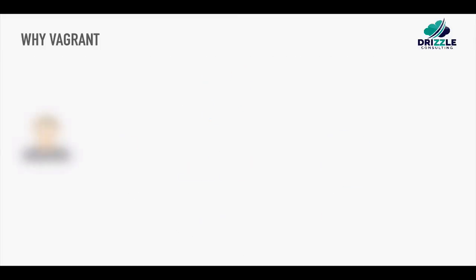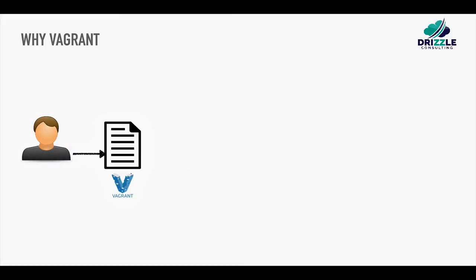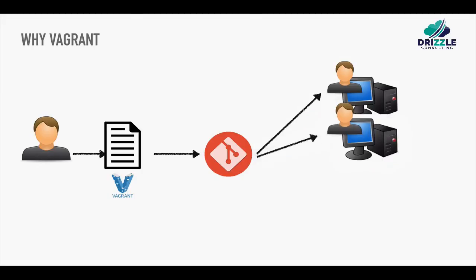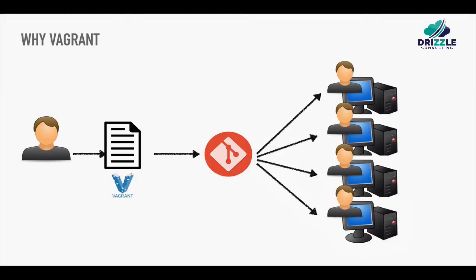So imagine a developer creates a new Vagrantfile for the environment, then adds it into source control — a Git environment, GitHub, or any other source control. Now this means it's going to be available for everyone in the team. So everyone in the team is going to obtain the same Vagrantfile that got created once.